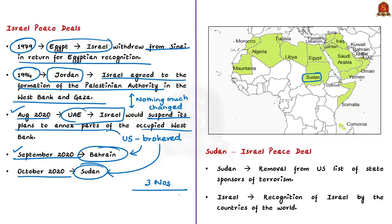For Sudan, signing this deal is important because the US announced it will be removed from the US list of state sponsors of terrorism. If US sanctions are removed, Sudan could receive much-needed economic aid from various countries and international organizations. Sudan's longtime ruler President Omar al-Bashir was removed from power in April 2019, and Sudan is currently ruled by a transitional civilian-military council.